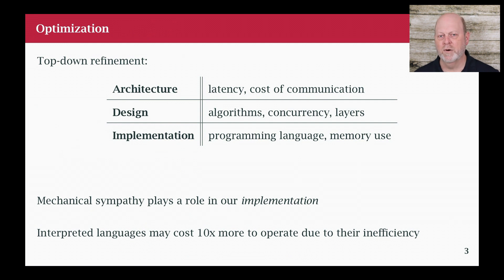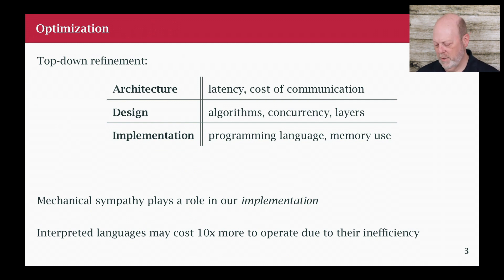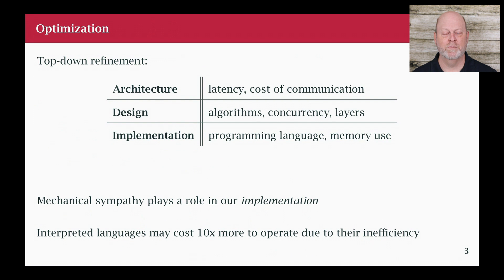It's hard to do mechanical sympathy with an interpreted language, because they're designed to abstract the machine away from you so you can't even see it, and that abstraction is expensive. We typically see much worse performance with an interpreted language in the cloud — in some cases maybe an order of magnitude compared to a compiled language. So what I'm talking about really only applies to compiled languages, and I'm going to be doing it in the context of Go.